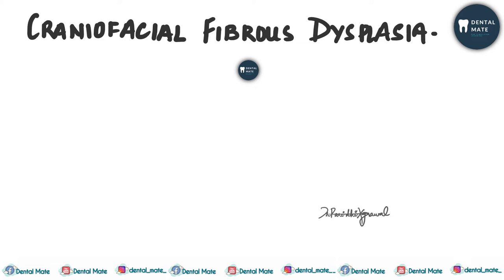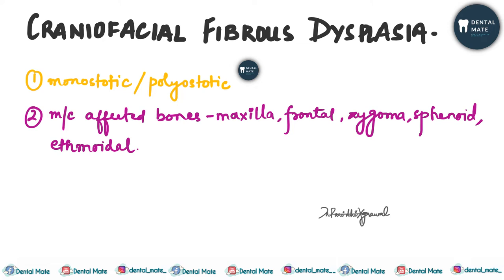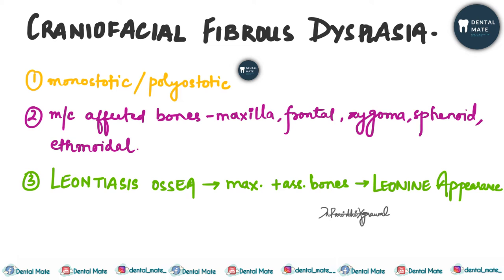The third type is craniofacial fibrous dysplasia, which can be either monoostotic or polyostotic. The mostly affected bones are the maxilla, frontal bone, zygoma, sphenoid, and ethmoidal bone. When the maxilla and associated bones are affected, it gives a lion-like or leonine appearance, and therefore it is known as leontiasis ossea.